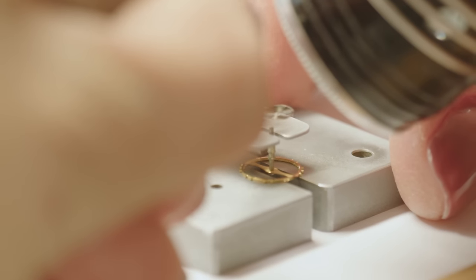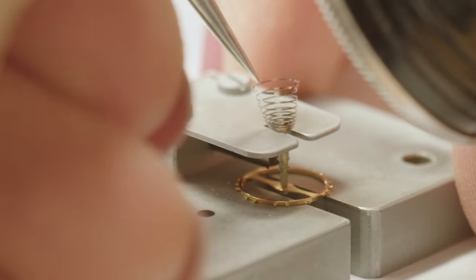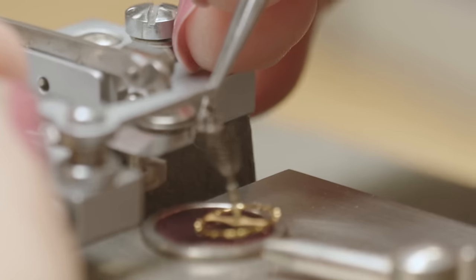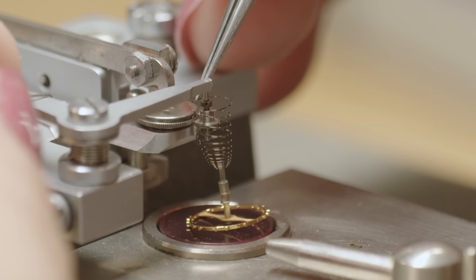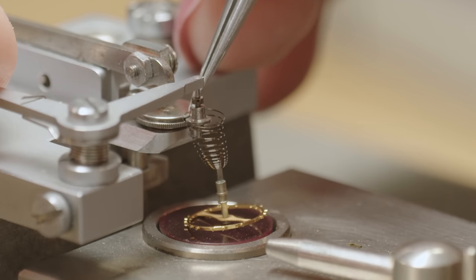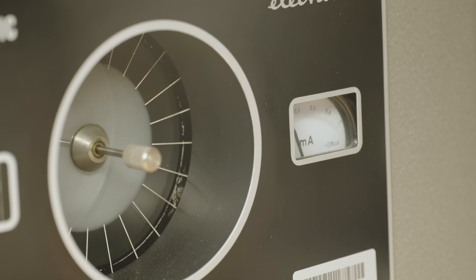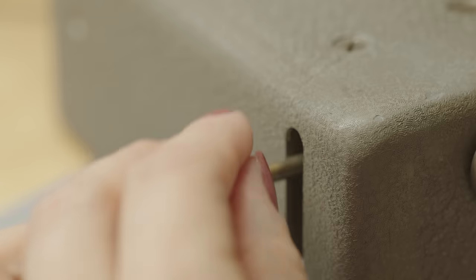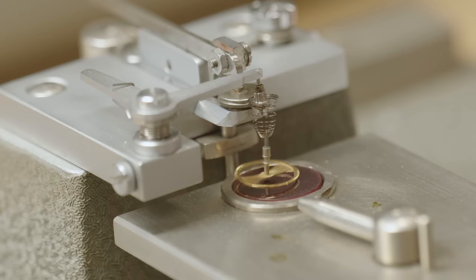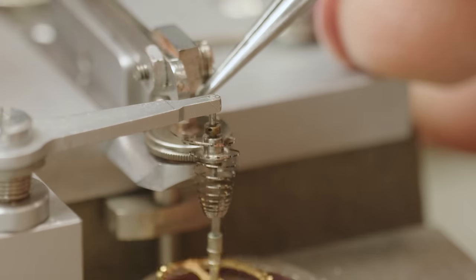One of the most delicate procedures the restoration team undertakes is the replacement of the balance spring. The balance spring is such a sensitive part that it must be tuned exactly to each watch. The balance wheel needs to beat back and forth at exactly the right speed, or the watch will keep bad time. This is adjusted by lengthening and shortening the spring itself to get the ideal swing, or amplitude, for a perfectly timed beat before it is trimmed to the precise length.